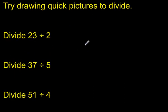So you might want to try some examples on your own now. Try drawing some quick pictures to divide these problems. 23 divided by 2. Draw 2 groups and share 23 tallies evenly. You might have a leftover or some leftover. You'll try the next one. 5 groups share 37 among 5 groups. And then try sharing 51 among 4 groups.